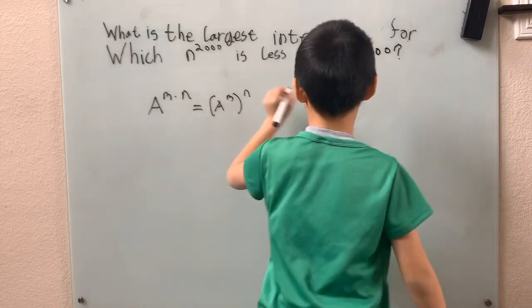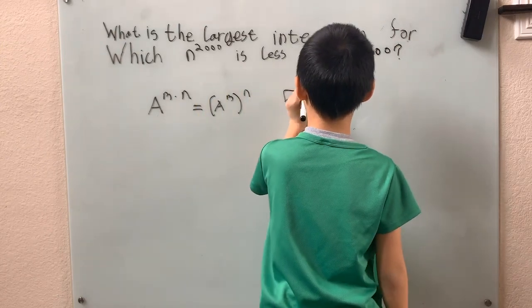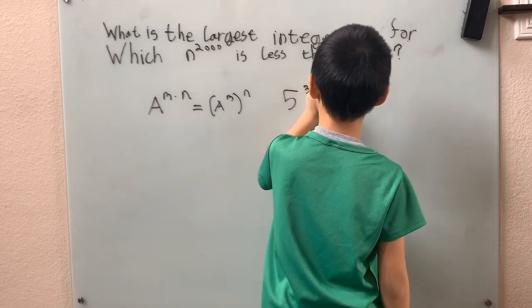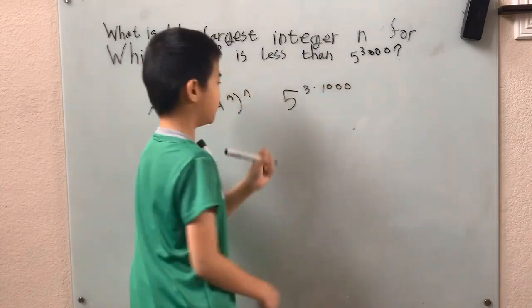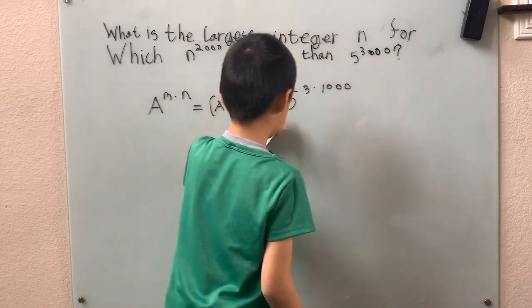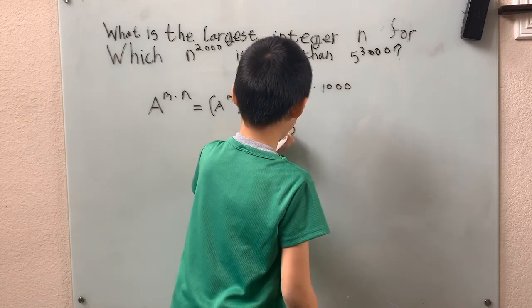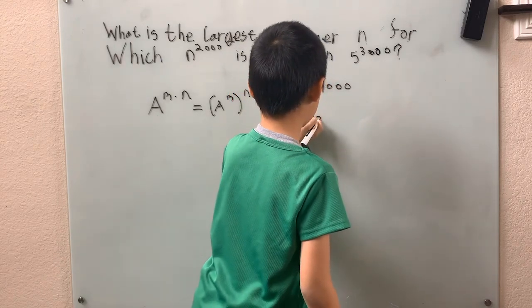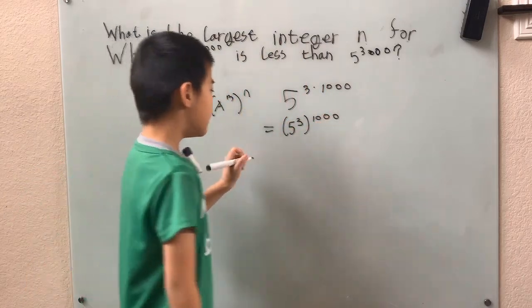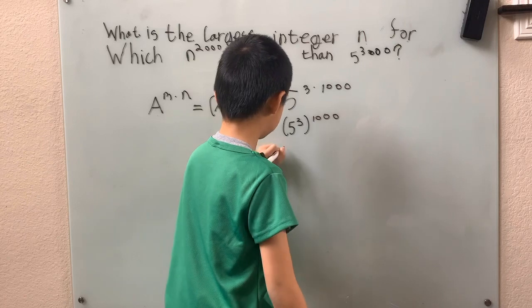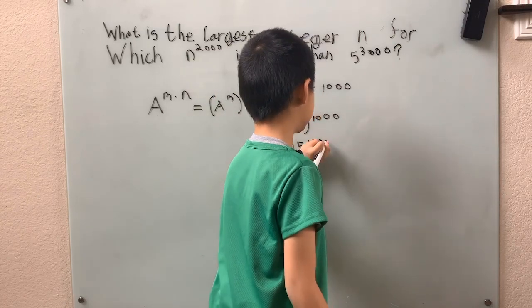Take n to the 2,000 and 5 to the 3,000 separately. We have 5 to the 3 times 1,000 power, take out a factor of 3. We have 5 to the 3, 5 cubed to the 1,000 power. And of course, 5 cubed, that's 125. Raise that to the 1,000 power.